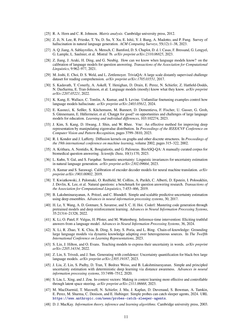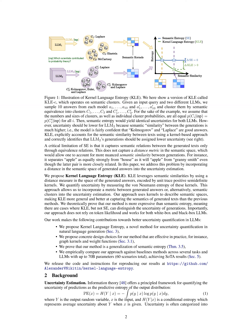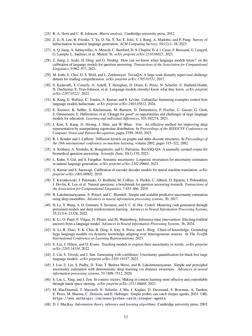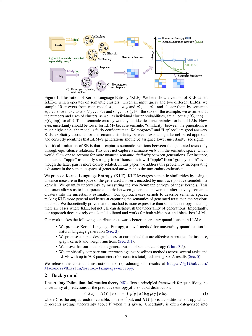Step 3 — Incorporating metric in uncertainty estimation: This approach allows for the incorporation of a metric between generated answers or semantic clusters into the uncertainty estimation, providing a more detailed assessment. Step 4 — Generalization and expressiveness: The method is more general and better at capturing the semantics of generated texts than previous methods, making it more expressive in distinguishing uncertainty in generations.